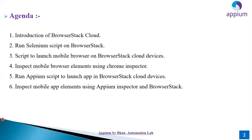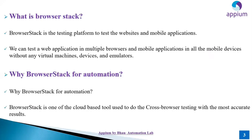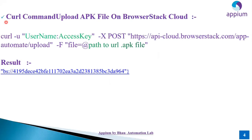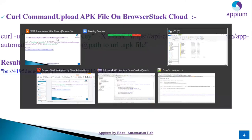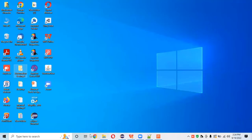Let's start with the practical session. First, this is the cURL command to upload your APK file to BrowserStack cloud. In this command, we need to define our username — the username we have on BrowserStack cloud. For example, we have a demo account on BrowserStack cloud.